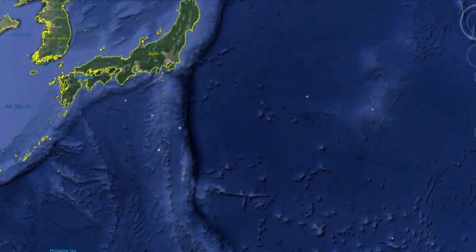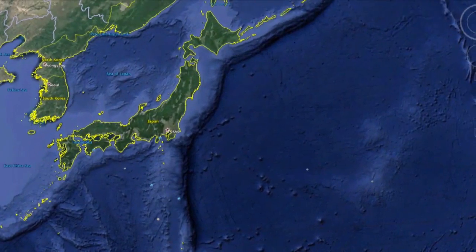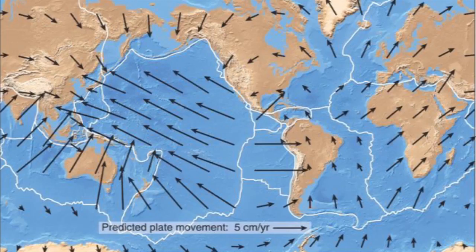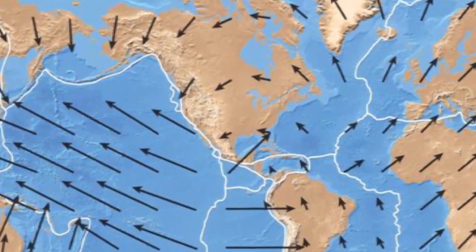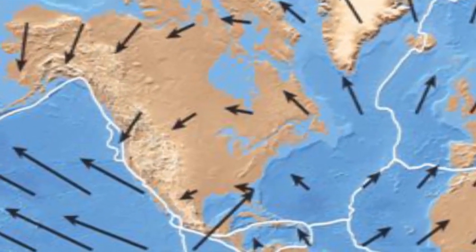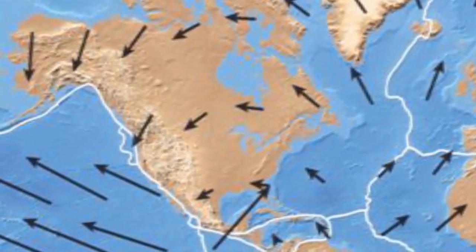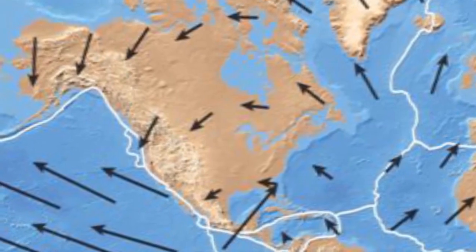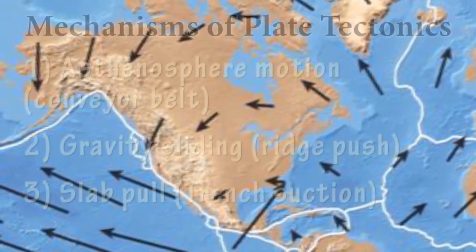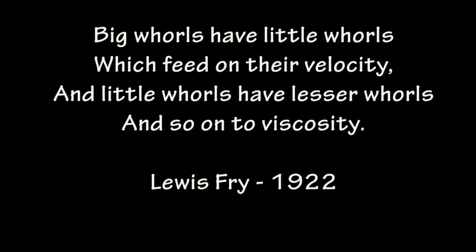So clearly slab pull is an important driving force, though we also see plates that don't have substantial subduction zones, and they move as well, so clearly you need those other driving forces we started with — the asthenosphere conveyor belt and gravity sliding.